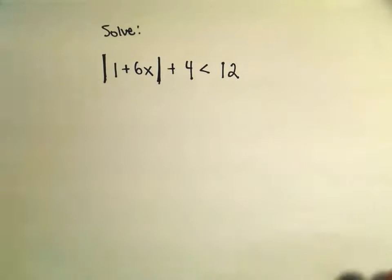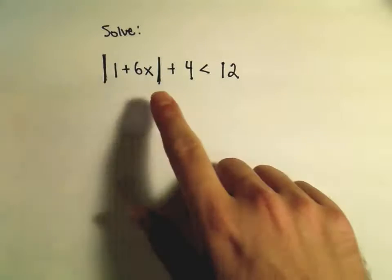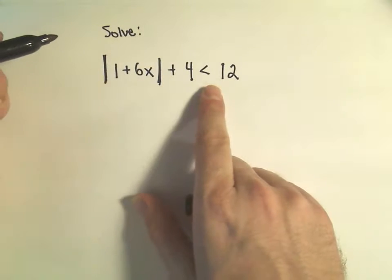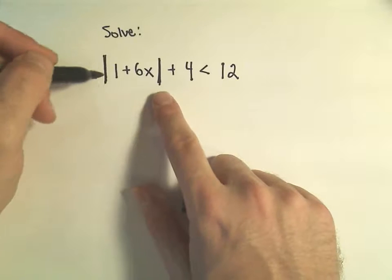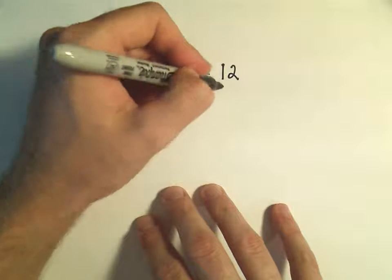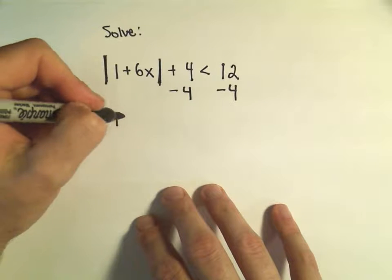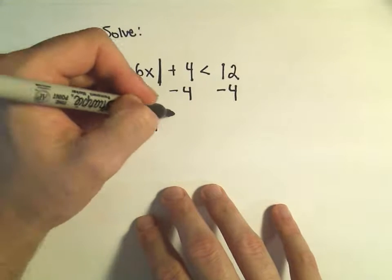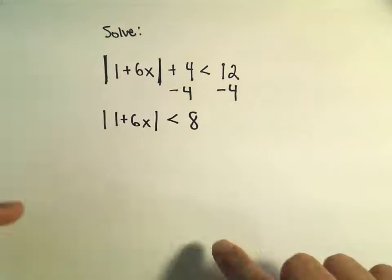So in this case we have the absolute value of 1 plus 6x and then plus 4 less than 12. Usually the first thing I try to do is to get the absolute value by itself. So I'm going to do that by subtracting 4 from both sides. Then we have the absolute value of 1 plus 6x is less than 8.